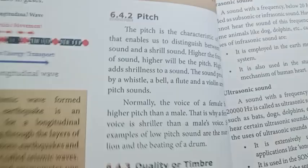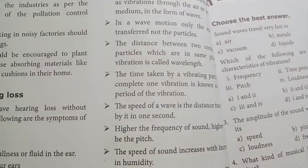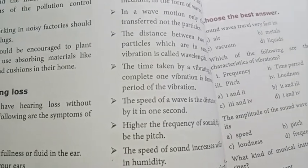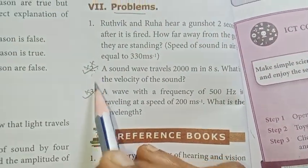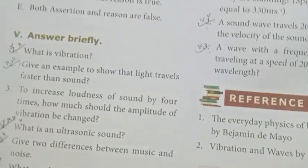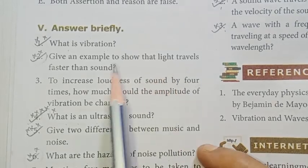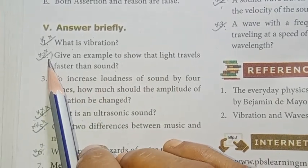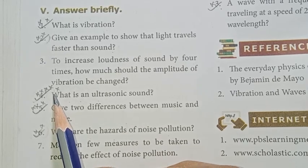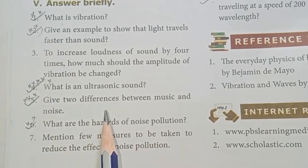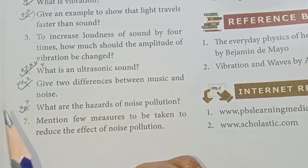Next, Unit 6 — Sound. In the Sound unit, you'll see page number 70. One marks — all the same. You'll see problems. You'll see second and third repeated. Answer briefly: What is vibration? Important. Give an example to show that light travels faster than sound — that is important. What is an ultrasonic sound? That is repeated — very important. Give two differences between music and noise — important. What are the hazards of noise pollution? Three districts.